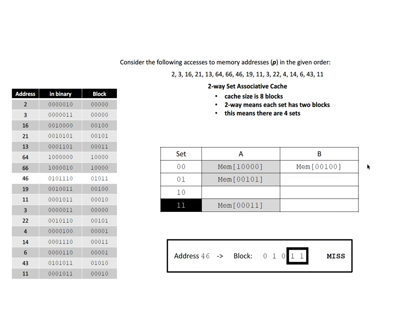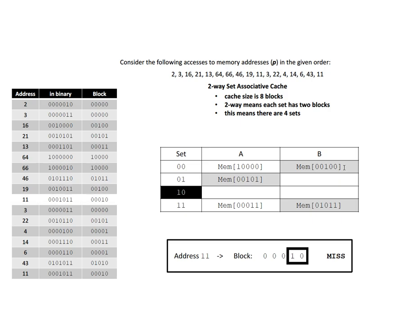Next we access address 46, which maps to set 11. The block currently in that set is not what we're looking for — it's a miss — but there's space available, so we add it without eviction. Next is address 19, which maps to set 00, and that block is already in the cache — so it's a hit. The following access is block 000010; there's nothing in that set, so it's a miss and we add it to the cache.